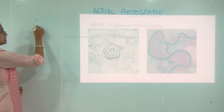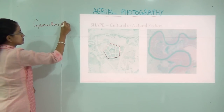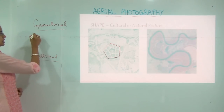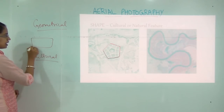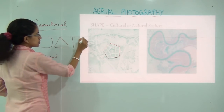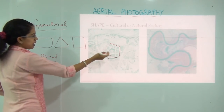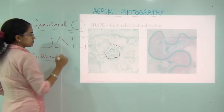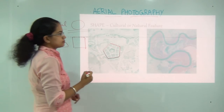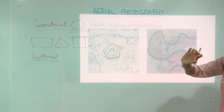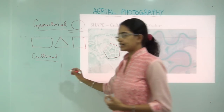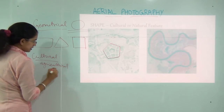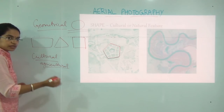Shapes can be broadly classified into geometrical or cultural shapes. Geometrical shapes can be rectangular, triangular, square, pentagon, linear, or circular. Cultural shapes — a good example can be landscape features. So you can have agricultural fields or urban landscapes.